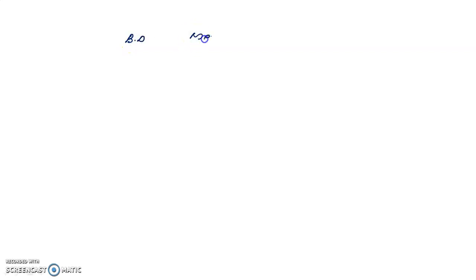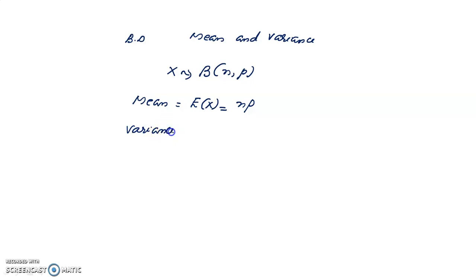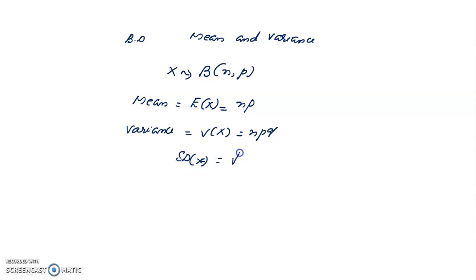Now we will go to the mean and variance of a binomial distribution. If a random variable X follows a binomial distribution with parameters n and p, then the mean E(X) = np, the variance V(X) = npq, and the standard deviation is the square root of npq.